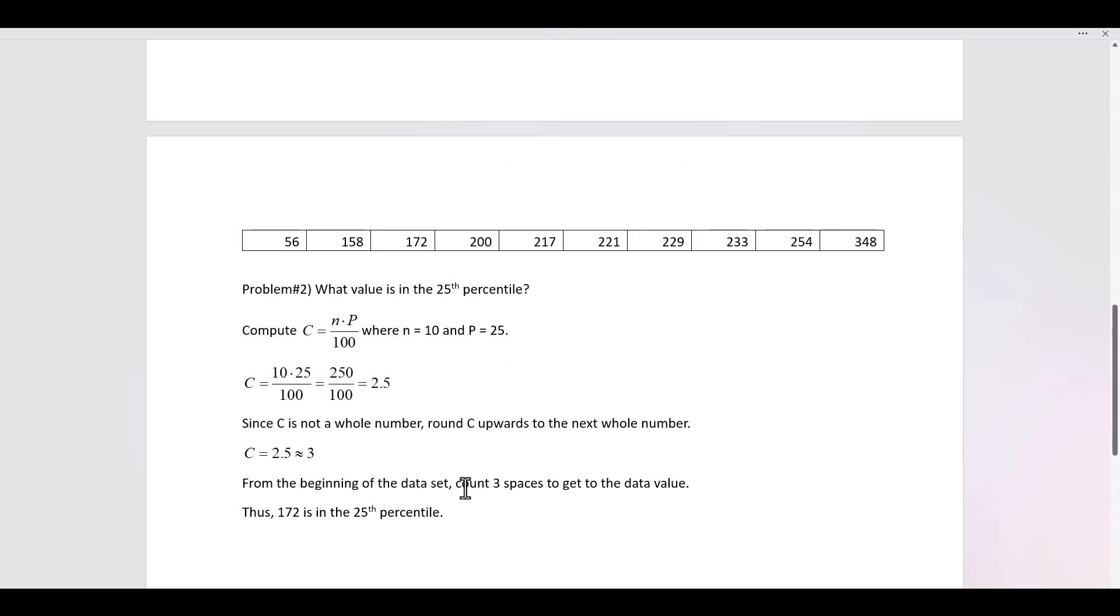The second problem is asking what value is in the 25th percentile. We have to compute N times P over 100. This is called C. Think of C as counting, how many spaces we have to count.